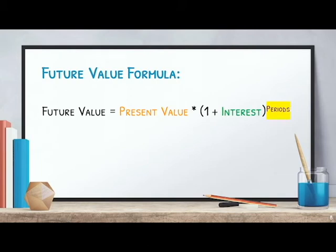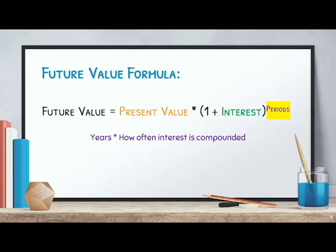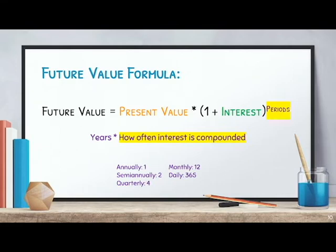The last variable is the amount of periods, and this also has to do with how often interest is compounded. For periods, we take the number of years — how many years into the future we want to find the value — and multiply that by how often interest is compounded. Annually means multiply by one, semi-annually means multiply by two, quarterly means multiply by four, and so on.